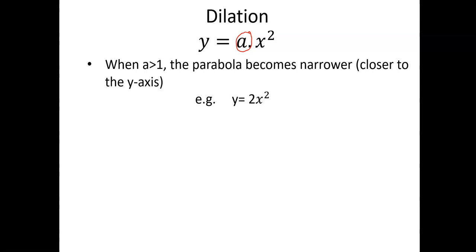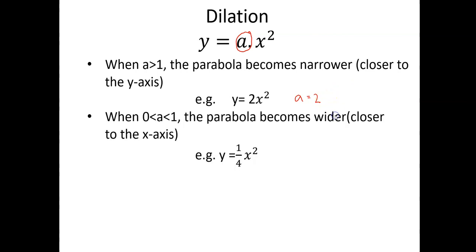For example, y is equal to 2x squared — a here is equal to 2. Since 2 is greater than 1, this graph will be narrower than the basic graph of y is equal to x squared. When a is between 0 and 1, the parabola will become wider, or closer to the x-axis. For example, y is equal to one quarter x squared. In this case, a equals one quarter, which is between 0 and 1, so this graph will be wider than the basic y is equal to x squared graph — it will be closer to the x-axis.